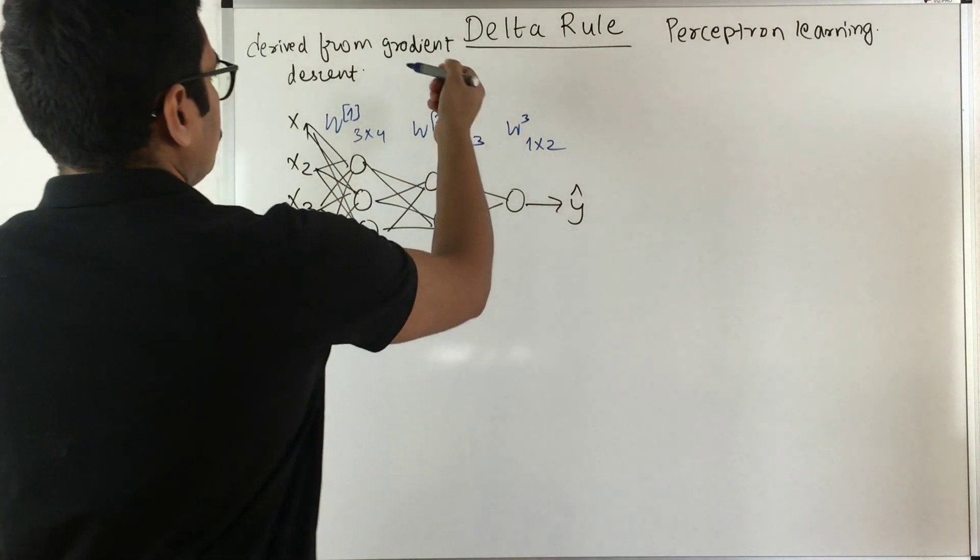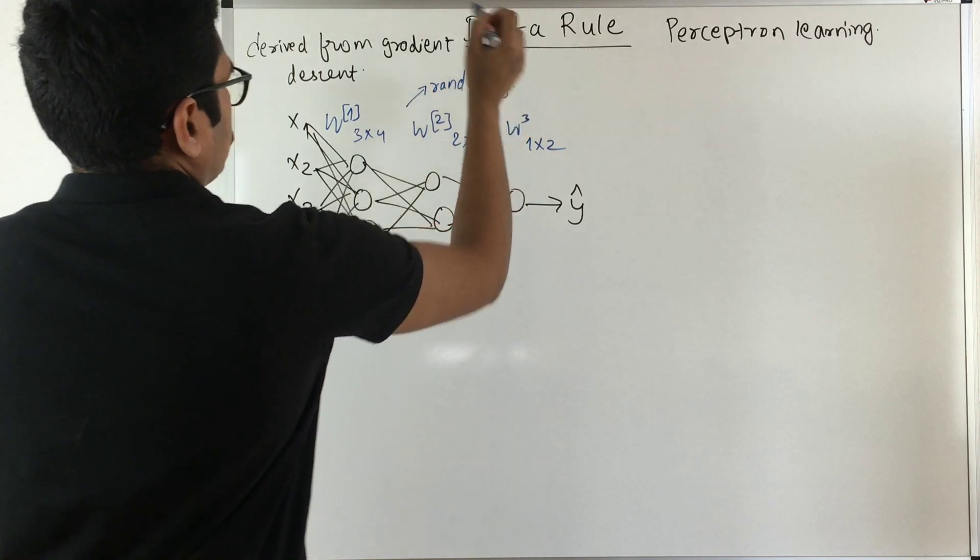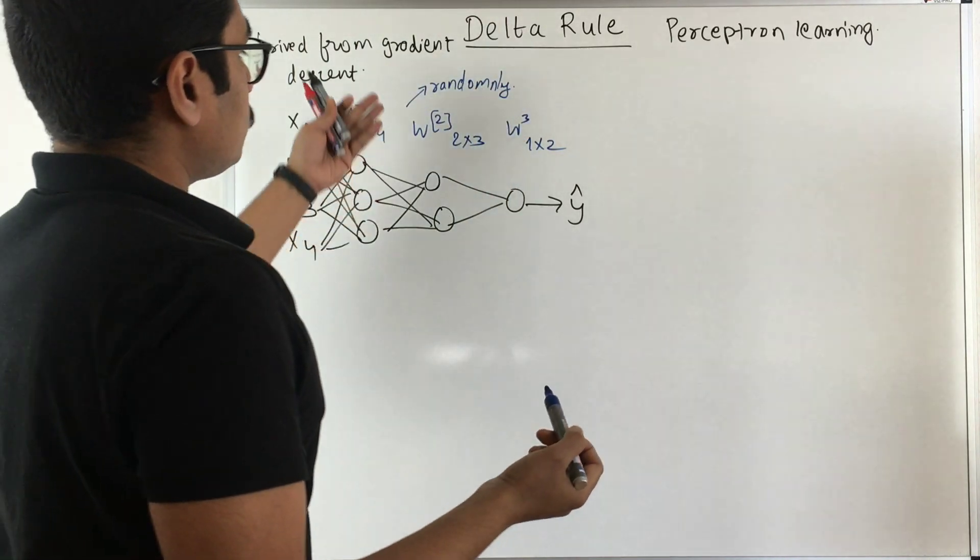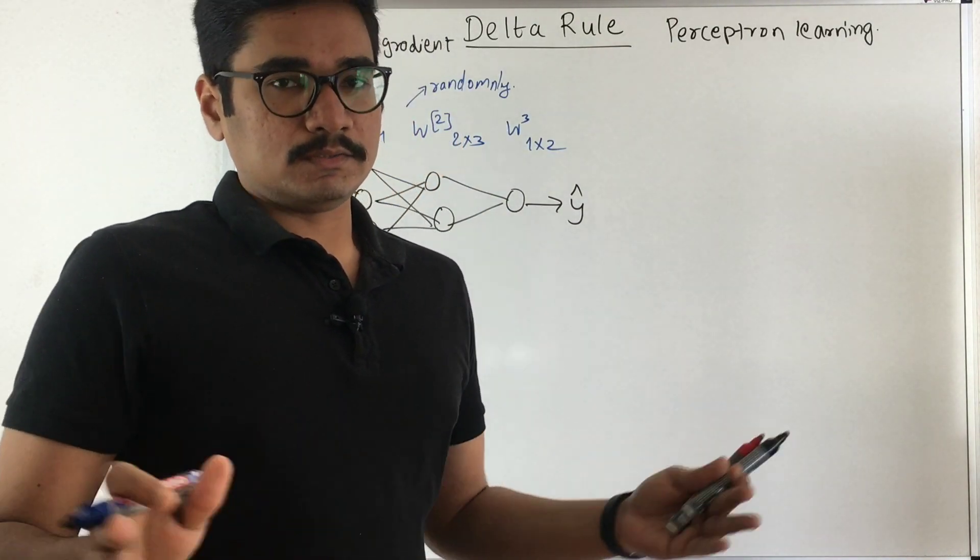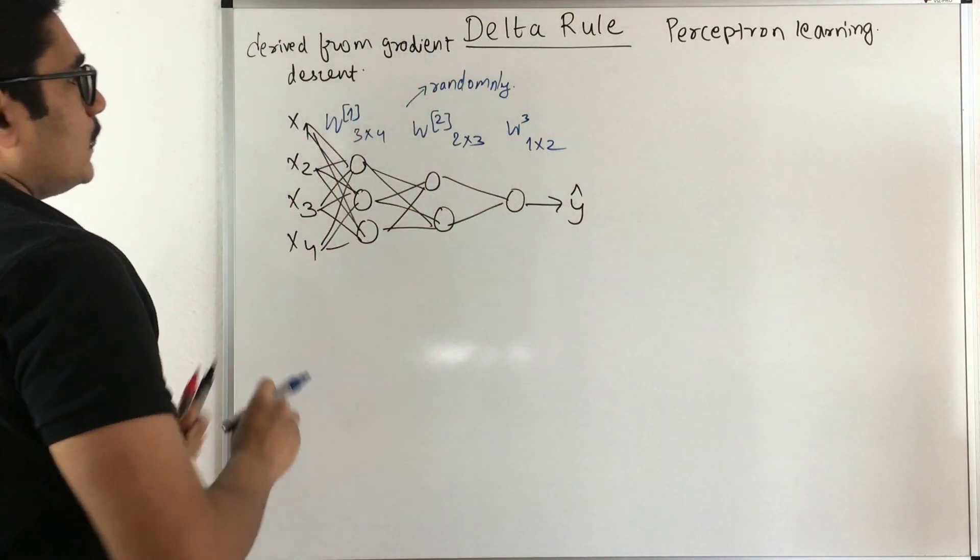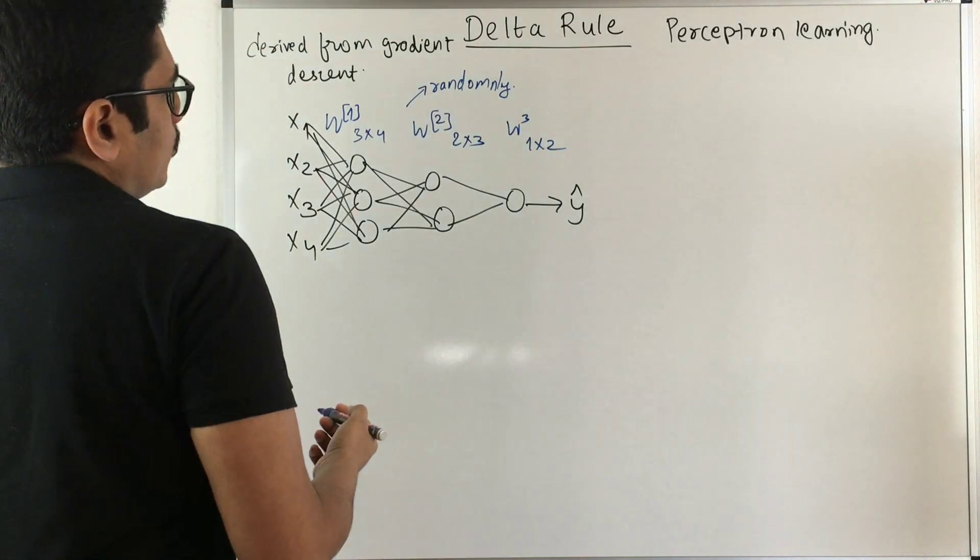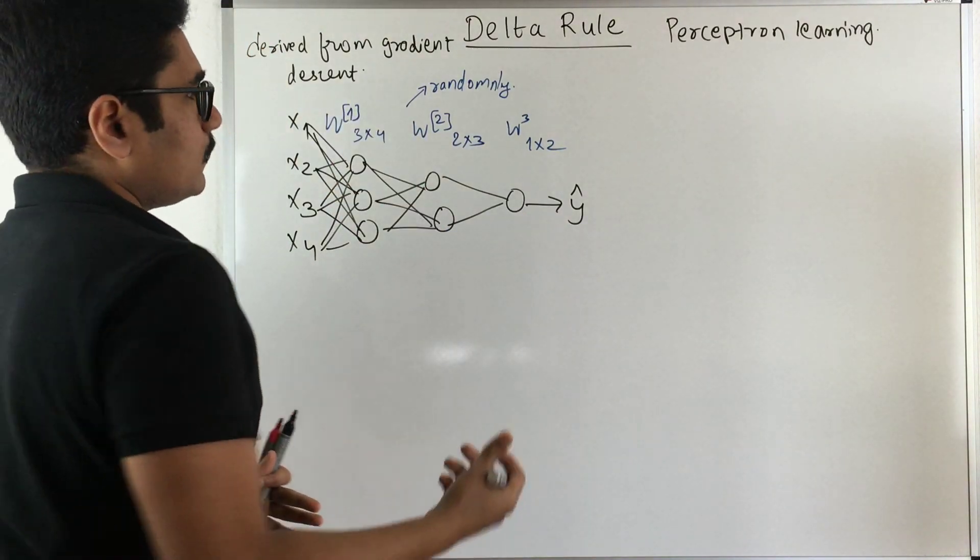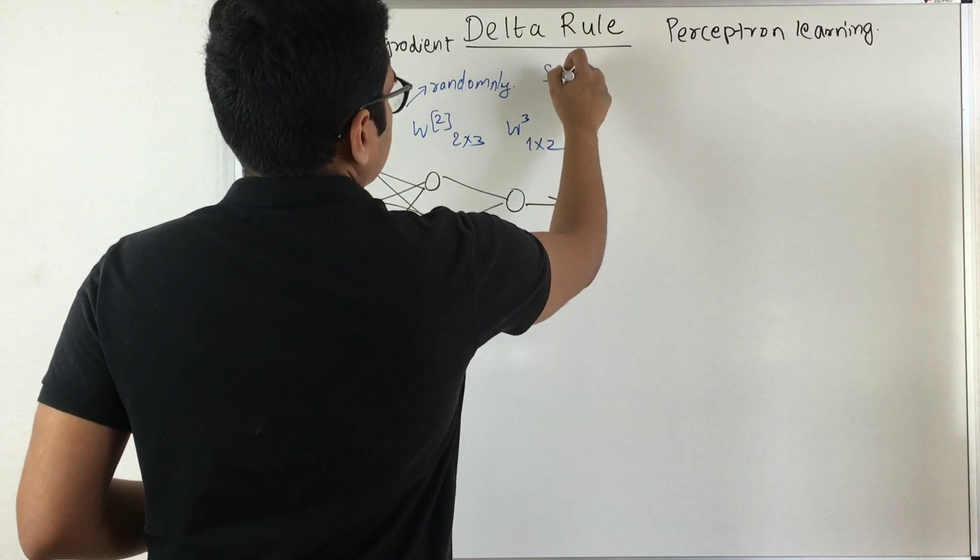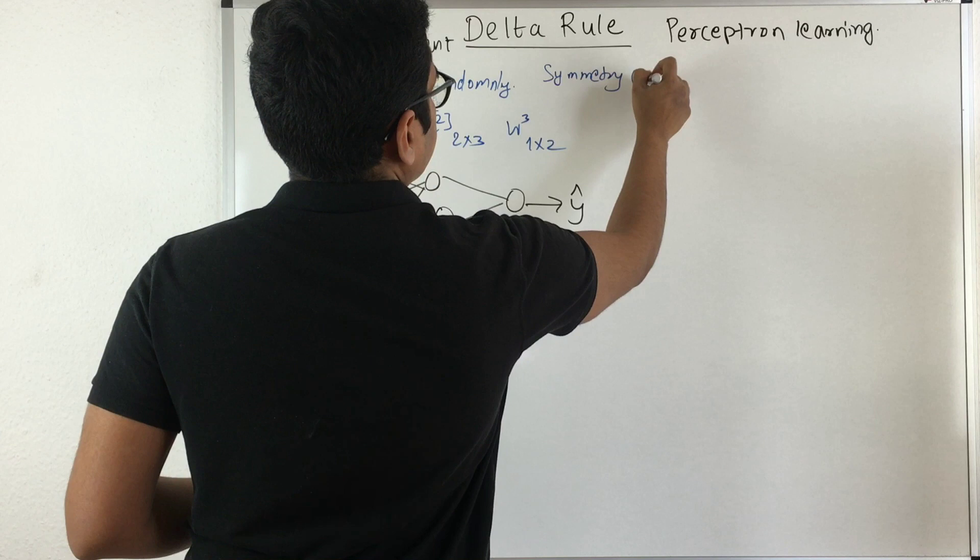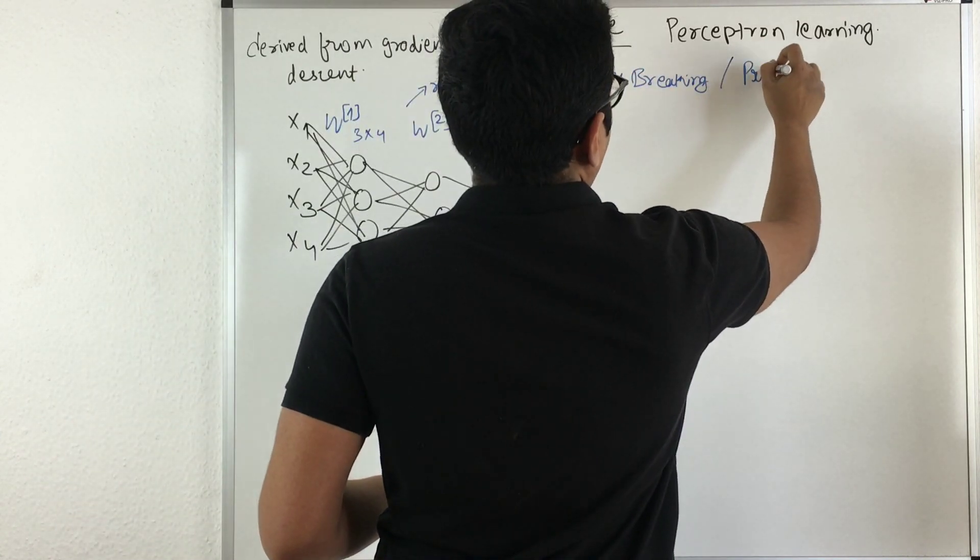I have mentioned before that these weights are assigned randomly. But we have not discussed why these are assigned randomly or why we are not keeping a uniform value across all these. So today we will be starting with this issue that is why we assign this randomly. Whenever we design a neural network, it always has a problem called as symmetry breaking or also called as problem of symmetry.